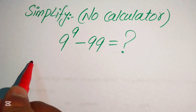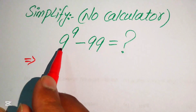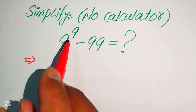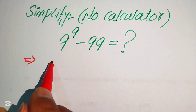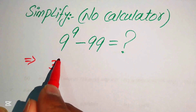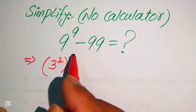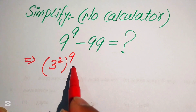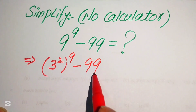The very first step is to focus on this term. We have 9 to the power of 9. We write our base 9 equals 3 squared, and its exponent is 9, minus 99.